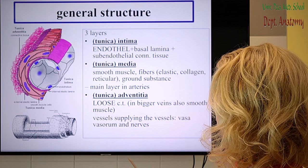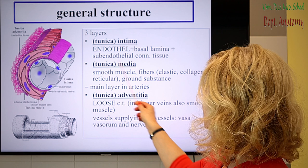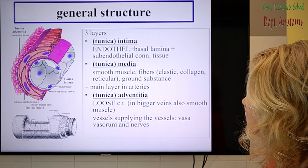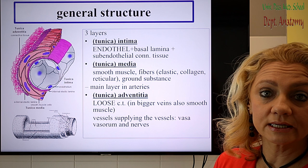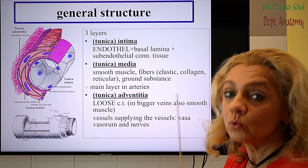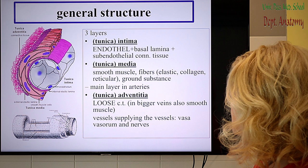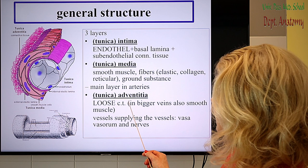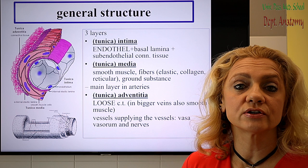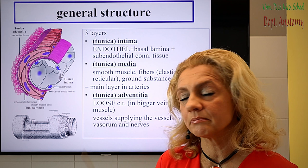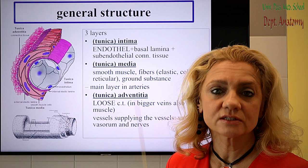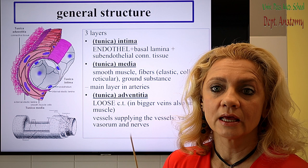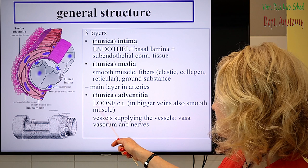As endothelial cells are epithelial cells, we have a basal lamina. Depending on the size of the blood vessel, we can have very thin or thicker subendothelial connective tissue. The media contains smooth muscle and connective tissue fibers and ground substance; the ratio between smooth muscle cells and fibers can vary greatly depending on the vessel type. The adventitia is loose connective tissue — calling it dense connective tissue is a big mistake, because if it were dense, the blood vessel could not dilate and its function would be lost.